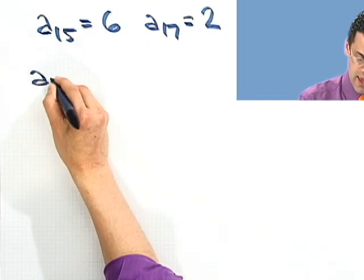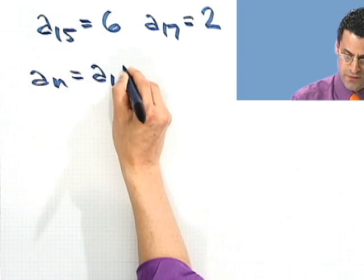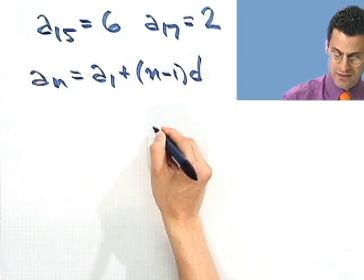Okay, if I tell you it's arithmetic, what would I do? Well, I know the formula. The formula is an equals a1, the first term, plus n minus 1 times that difference.